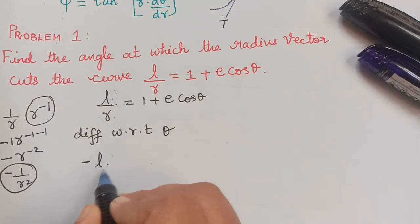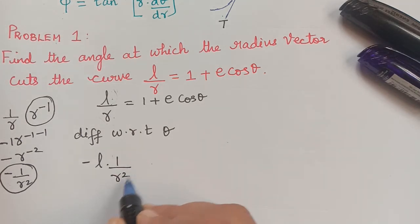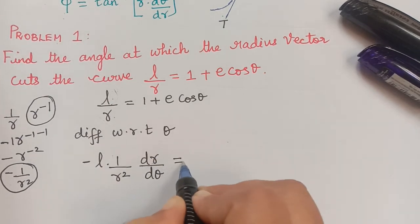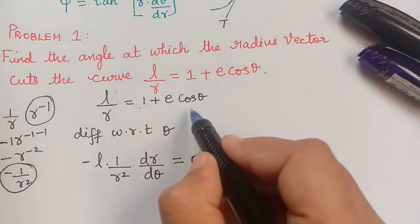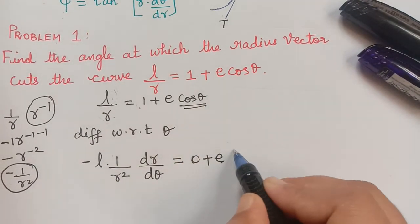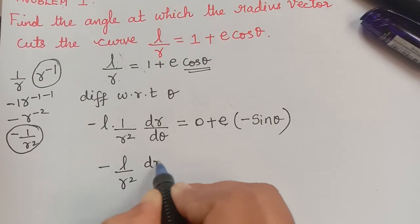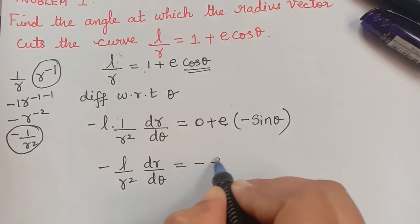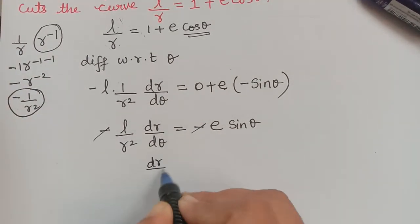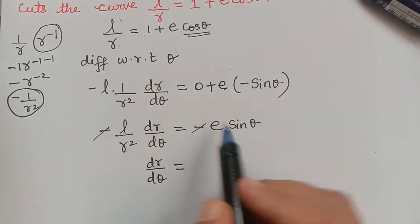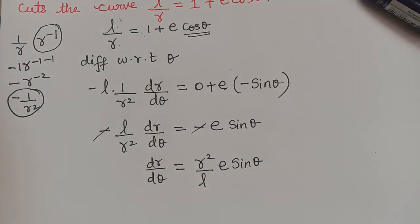This becomes: negative l multiplied with 1/r² and further we differentiate r with respect to theta by the chain rule, giving dr/dθ. That is equal to: the differentiation of 1 is 0, plus e times the differentiation of cosθ, which is negative sinθ. So the left hand side is -l/r²·(dr/dθ) = -e·sinθ. Cancelling the negative sign on both sides, we get dr/dθ = (r²/l)·e·sinθ.